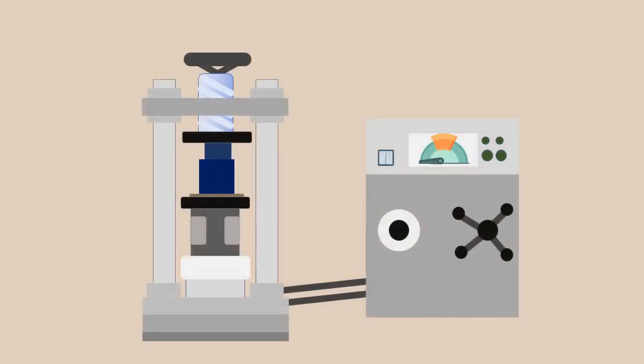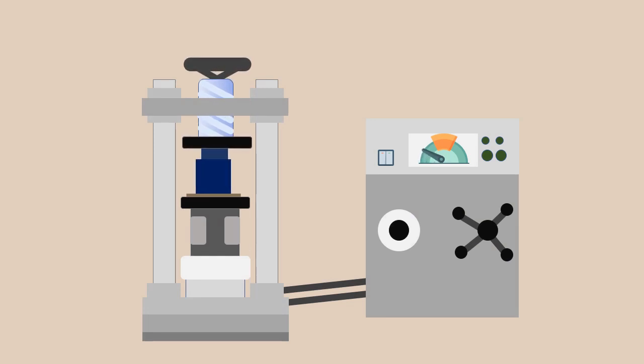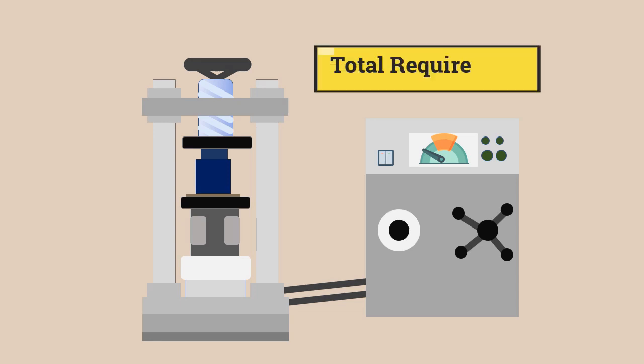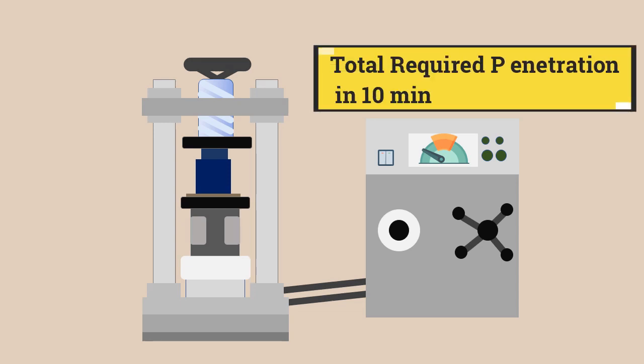The apparatus, with the test sample and plunger in position, is placed in the compression testing machine. The load is applied at a uniform rate to cause a total required penetration of the plunger in 10 minutes.